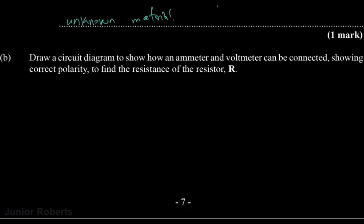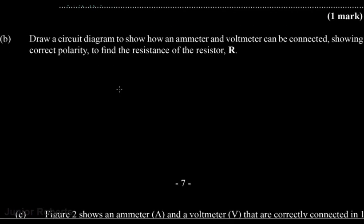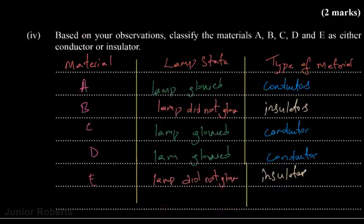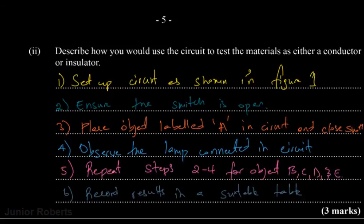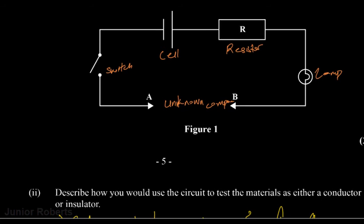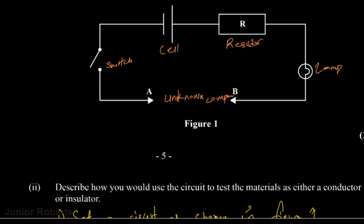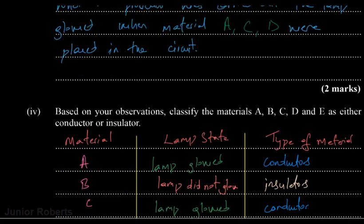Now it says draw a circuit diagram to show how an ammeter and a voltmeter can be connected, showing correct polarity, to find the resistance of R. So let's draw — let's look back at our circuit and redraw it.